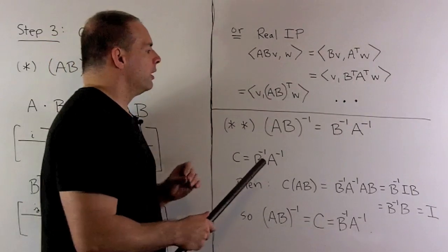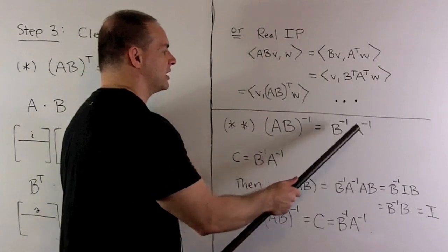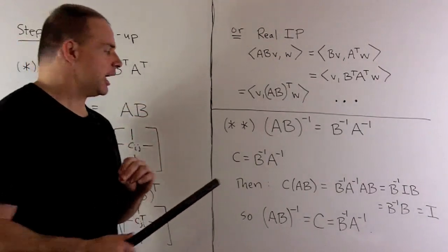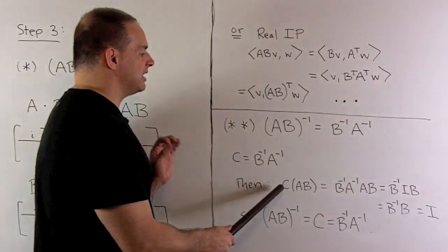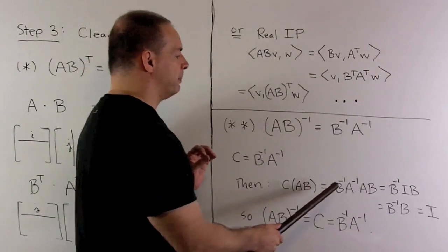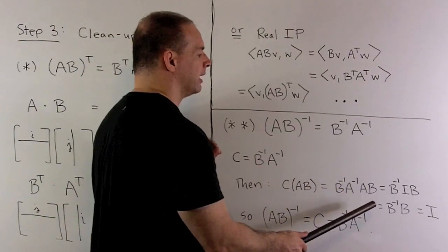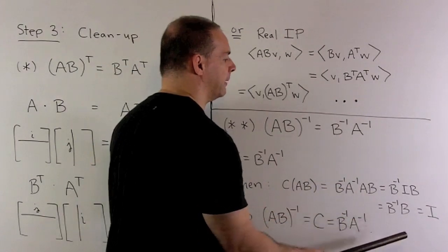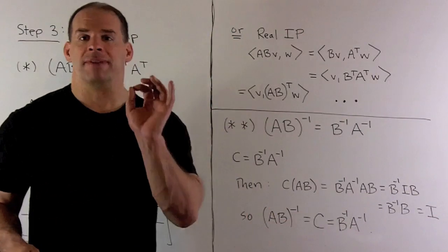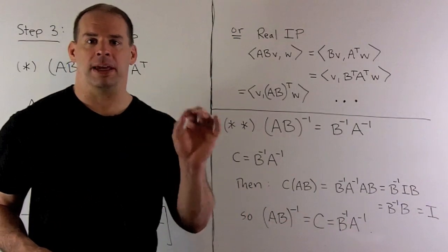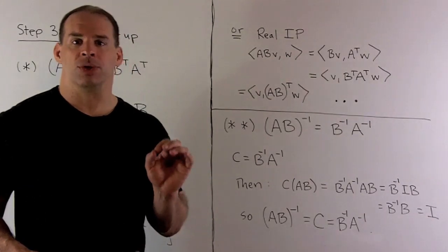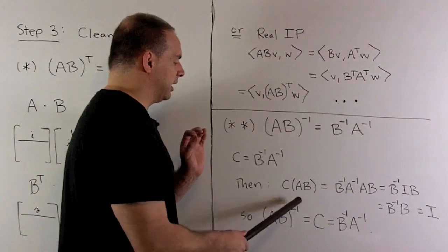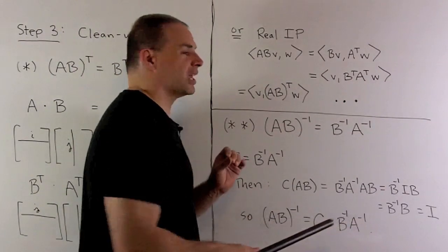Finally, let's show that AB inverse equals B inverse times A inverse. Call B inverse times A inverse the matrix C. Then C times AB gives B inverse A inverse times A times B, which equals B inverse times the identity times B, or B inverse times B, which equals the identity. So we found a matrix such that multiplying it by AB gives the identity — meaning C equals AB inverse, so AB inverse equals B inverse times A inverse.